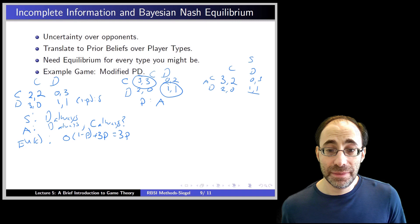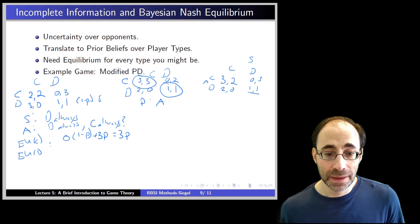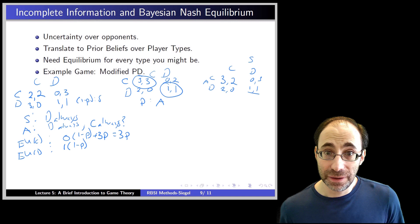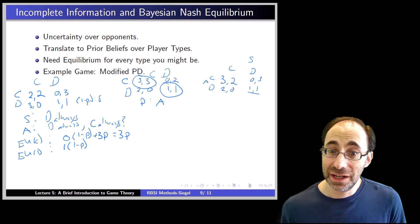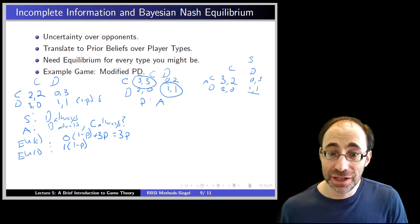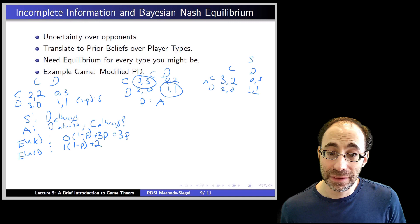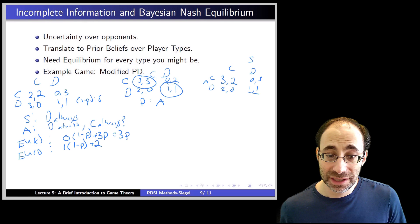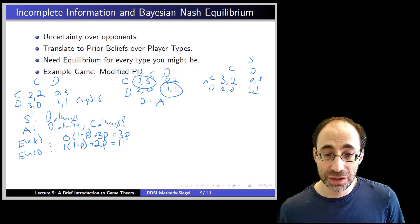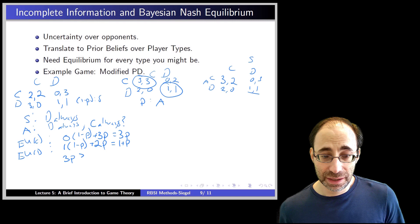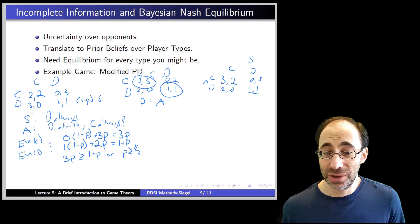Now what happens if I play defect instead? If I face a selfish type, I get 1 because we're both defecting — I avoid the zero payoff. That happens with probability 1 minus P. If I face an altruistic type, I defect while they cooperate, and my payoff from taking advantage of them is 2. That happens with probability P. So the expected utility from defecting is (1 minus P) plus 2P, which equals 1 plus P. Therefore, I will cooperate as long as 3P is greater than or equal to 1 plus P, which simplifies to P greater than or equal to 1/2.